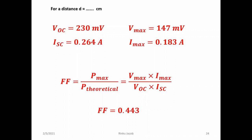For a particular distance d, VOC is 230 millivolt and ISC is 0.264 ampere, and Vmax is 147 millivolt and Imax is 0.183 ampere. So we can calculate the fill factor. The fill factor is P maximum divided by the theoretical P value, that is Vmax multiplied by Imax divided by VOC multiplied by ISC. Substituting these values gives the fill factor as 0.443. You then repeat the experiment for the next distance, increasing the separation between the light source and the solar cell, and again calculate VOC, ISC, Vmax, Imax, and the fill factor. Repeat for the third distance as well, and analyze how the fill factor and the MPP vary when you change the intensity by changing the distance between the light source and the solar cell.